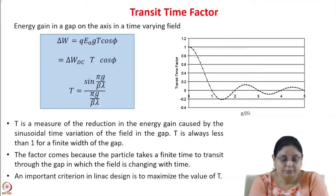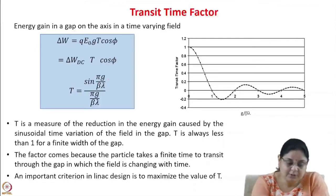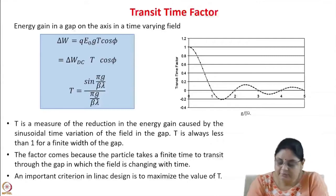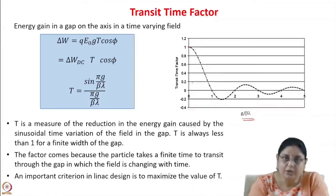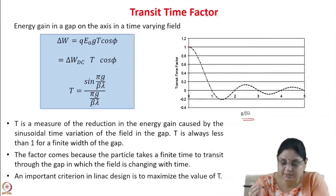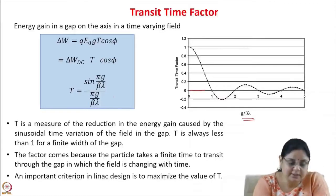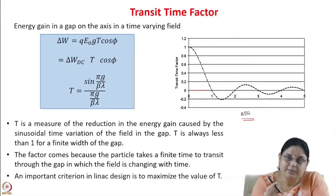If you draw the transit time factor, it is of the form sinx/x. Plotting T versus g/βλ, we see that it is maximum with a value of 1 at g = 0. However, g = 0 is not possible because there would be no gap and hence no acceleration. As the gap length increases, the transit time factor decreases and hence the energy gain decreases. One of the important criteria of linac design is to maximize the value of the transit time factor.